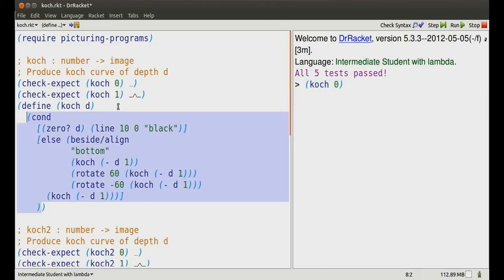Look at the body of the definition. Replace all the d's by zeros. It's conditioned with two question-answer pairs. Look at the first question. It asks, is 0 equal to 0? Of course it is. So it answers with a line that's ten dots along and black. There's that line.